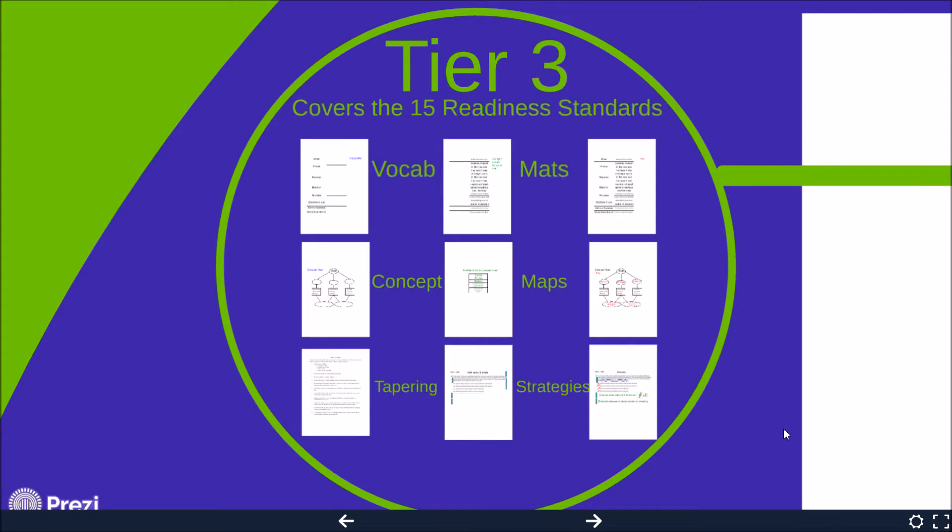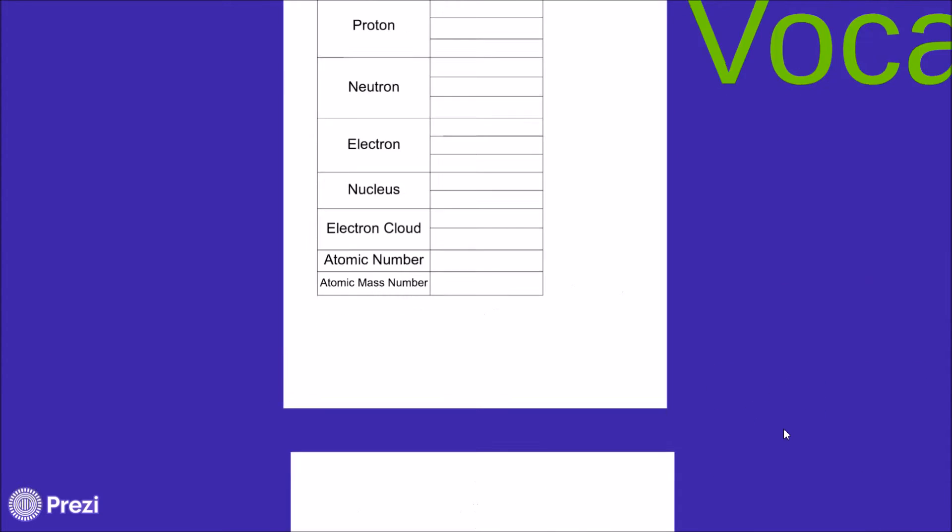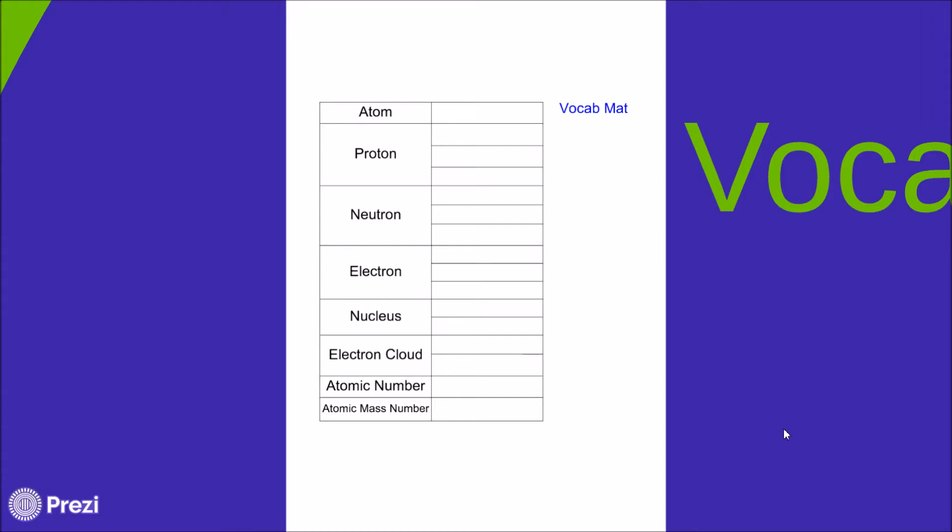The first thing the teacher would have the students complete is our vocabulary instructions on how to successfully implement the tier. First off, the students would each receive a vocabulary mat, preferably laminated. On the left-hand column there will be placing definitions. I chose readiness standard 8.5A, atomic structure. You'll notice the right column is empty. This is where the student will be placing definitions that were laminated and placed in a Ziploc bag.